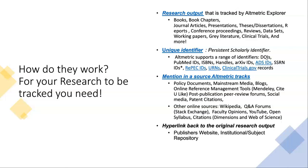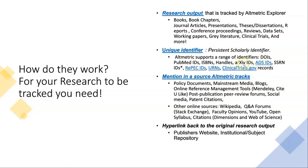PubMed has IDs, arXiv has IDs, repositories have IDs, the Social Science Research Network has IDs — there are lots of IDs out there. So they'll need something along those lines, just to distinguish your paper and make sure people can track it.